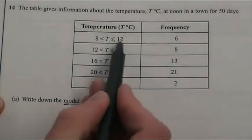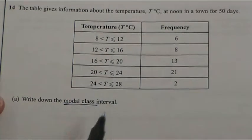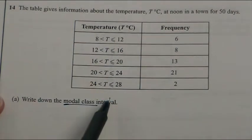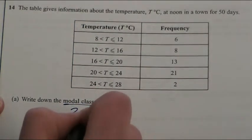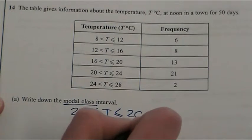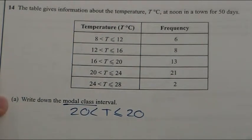Here is one class, second class, third, fourth, fifth, and which of these had the most in it? We can see it's this one. So this is the mode, 20 is less than T, which is less than or equal to 24. A very easy one mark.